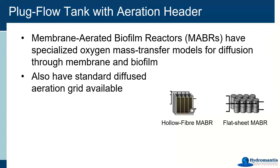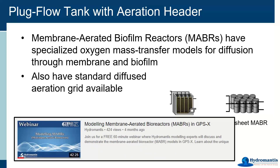Our membrane aerated biofilm reactors — we have two different kinds: hollow fiber and the flat sheet. These have specialized oxygen mass transfer models because they're delivering oxygen inside a membrane that is then diffused out through that membrane and into the biofilm that grows on that surface. We do also have other regular diffused options in the bottoms of the tanks, so you can actually apply other air on the outside to the bulk liquid as well. We just did a webinar on this in November or December, and we went through all the details of how our MABR models work — there's the oxygen transfer from the oxygen system into the bulk liquid, then from the bulk liquid into the biomass, then from the membrane to the biomass. There are lots of terms to keep track of in the mass balancing of oxygen in these systems.